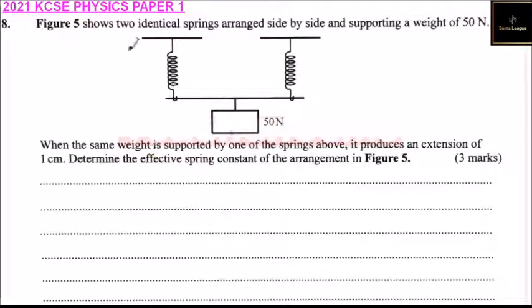Question number 8. Figure 5 shows two identical springs arranged side by side and supporting a weight of 50 newtons. So we have the arrangement: the first spring, the second spring, and the load.